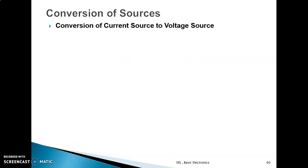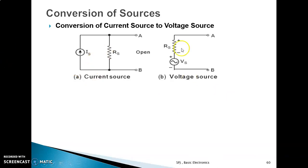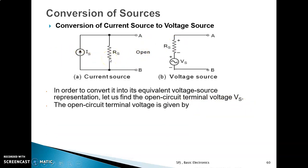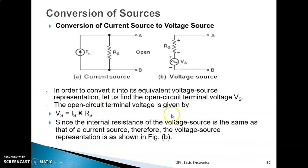Conversely, to convert a current source into its equivalent voltage source, find the open circuit terminal voltage: VS equals IS into RS. The equivalent voltage source is represented by VS in series with resistance RS. Since the terminal resistance of the voltage source is the same as that of the current source, this is how we can convert a current source into a voltage source.